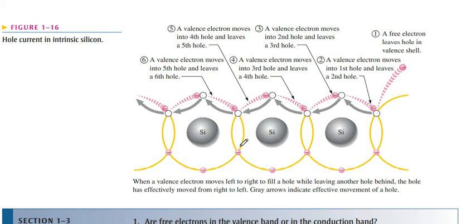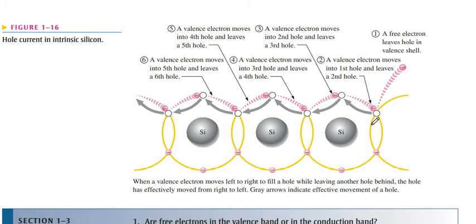This diagram shows what happens when we apply voltage across a silicon crystal. The electrons move from one atom to another, and the holes move in the opposite direction. This movement of electrons is called electron current, and this movement of holes is called the hole current.